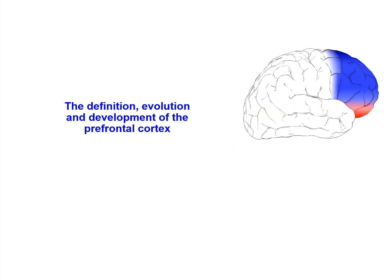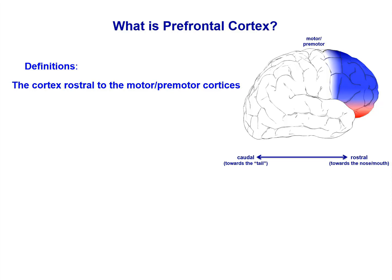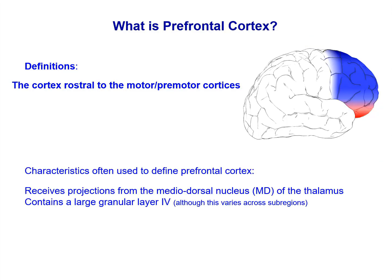Let's begin with some basics: the definition, evolution, and development of the prefrontal cortex. The prefrontal cortex is defined as the cortex rostral to the motor and premotor cortices in the frontal lobe — the term rostral means towards the nose. More informally, the prefrontal cortex is the cortex that sits behind our forehead. Anatomists often define it as the cortex receiving projections from the medial dorsal thalamic nucleus, including cortical layers that have a substantial layer 4, which receives thalamic inputs.